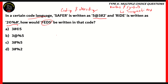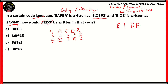We know that 'safer' is written as 5 @ 3 # 2. So S = 5, A = @, F = 3, E = #, and R = 2. Similarly, looking at 'ride' — R-I-D-E — it's written as 2 © % #. By analyzing both words, R is 2 in both, and E is # in both, confirming our approach is correct. So we equate the symbol in the code with the letter at the same position. That's how we solve codes involving numbers and symbols.